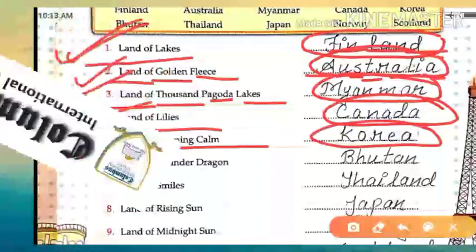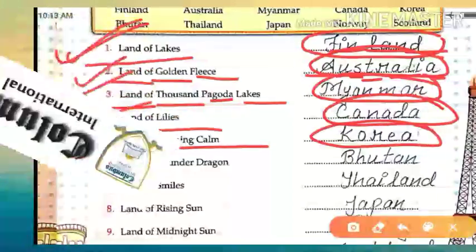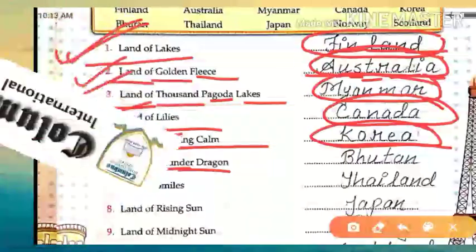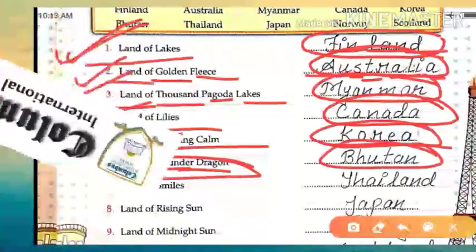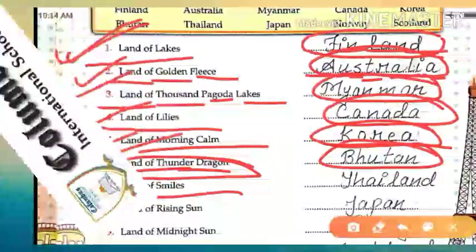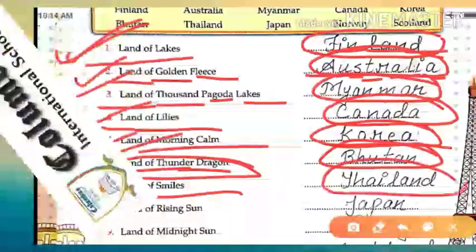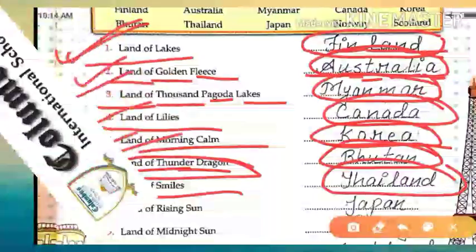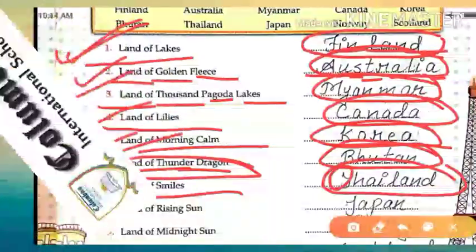Next is 'Land of Morning Calm,' and that country is called Korea — jis ko 'Land of Morning Calm' ke naam se jana jata hai, wo hai Korea. And then we have Bhutan, known as the 'Land of Thunder Dragon.' Next, 'Land of Smiles' — which country is that? That is Thailand. Spelling: don't be confused — it's T, not Z. T-H-A-I-L-A-N-D. Thailand.